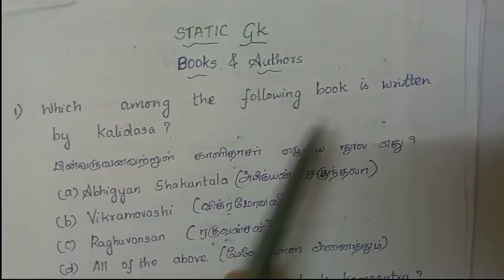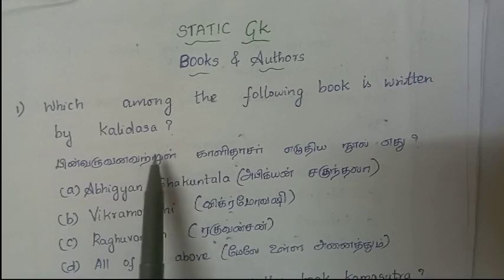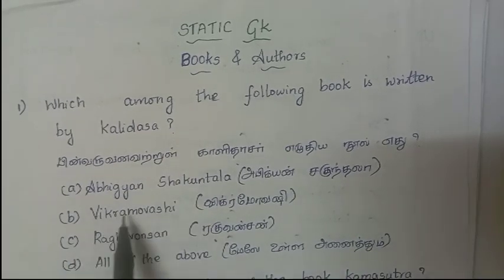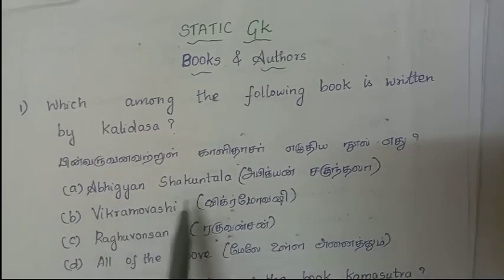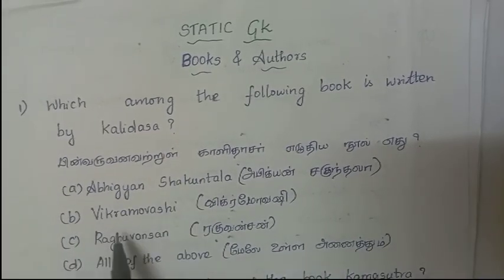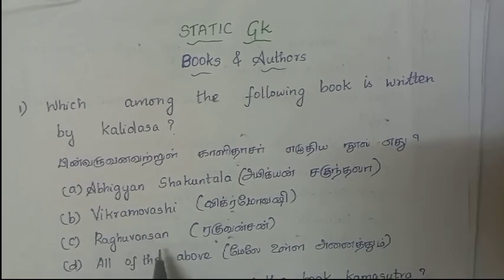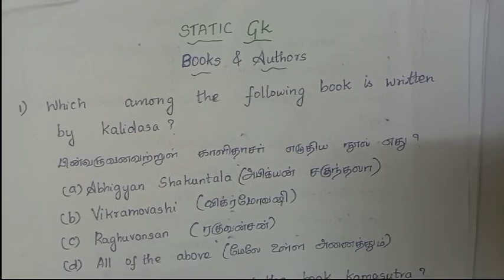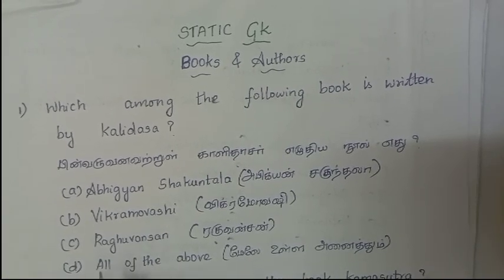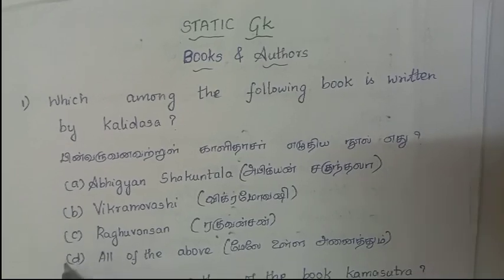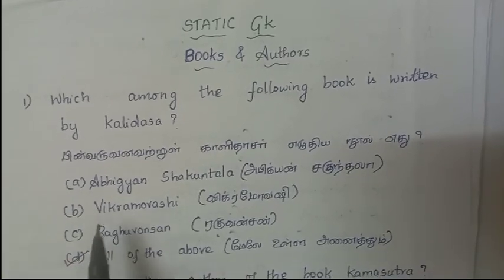First question: Which among the following books is written by Kalidasa? Option A: Abhijnana Shakuntala. Option B: Vikramorvashi. Option C: Raghuvamsha. Option D: All of the above. Answer is Option D, all of the above.